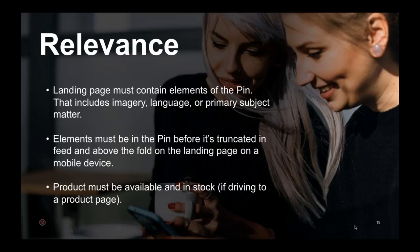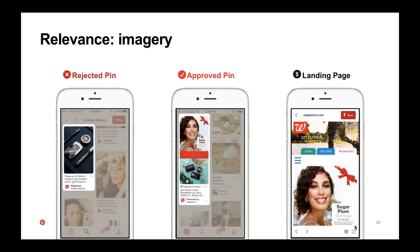Getting into some examples here, starting with relevance — specifically imagery. We're showing two pins: one rejected, one approved, and the landing page on the right. The rejected pin features makeup items none of which appear on the mobile landing page above the fold. However, the approved pin shows a model shot, and that same model shot is found on the landing page above the fold. So it's a seamless user experience — the middle pin would get approved, the pin on the left would get rejected.